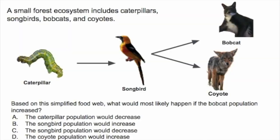A small forest ecosystem includes caterpillars, songbirds, bobcats, and coyotes. Based on this simplified food web, what would most likely happen if the bobcat population increased?